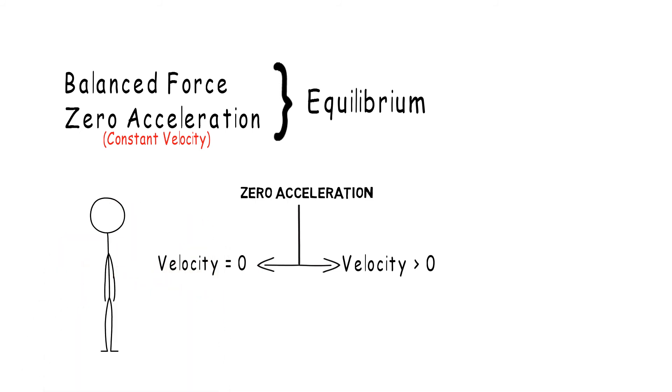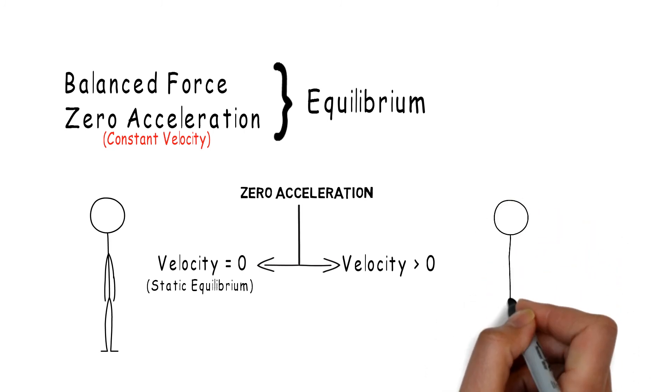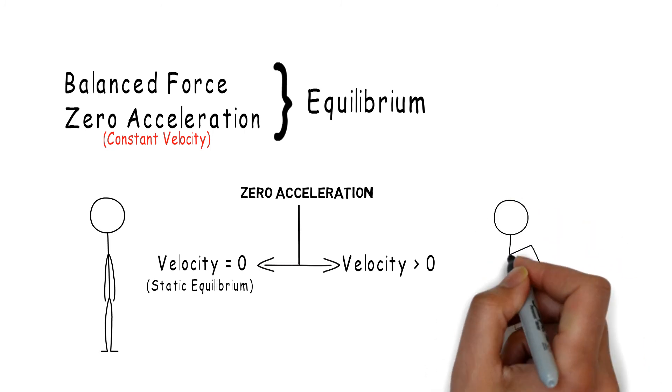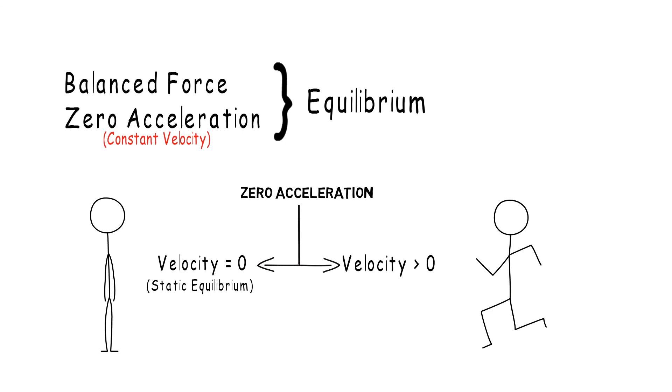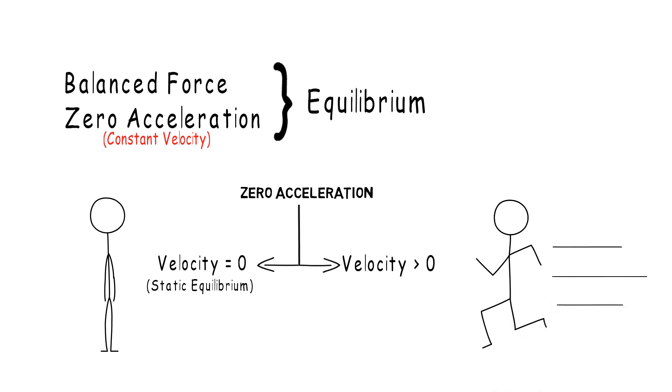A body which is at the same position with no movement at all and no forces to act on itself to cause acceleration will be in a state of static equilibrium. Whereas if a body is moving with a constant velocity with no forces to cause acceleration to this motion, then this condition will be called as dynamic equilibrium.